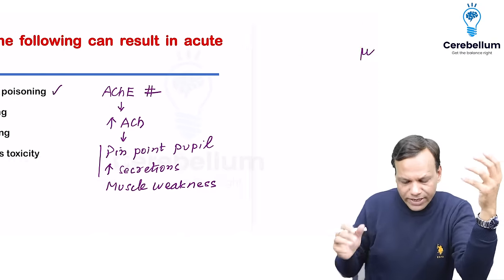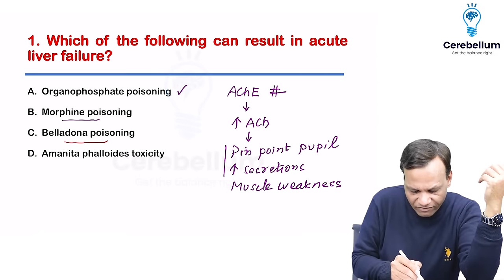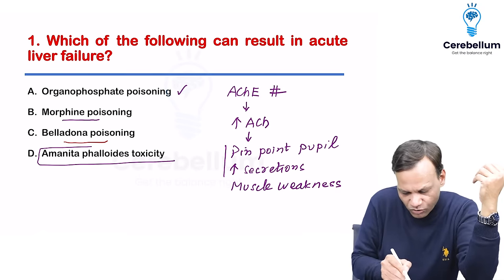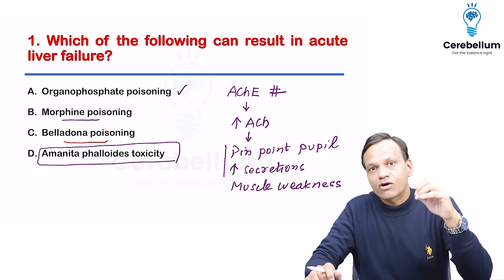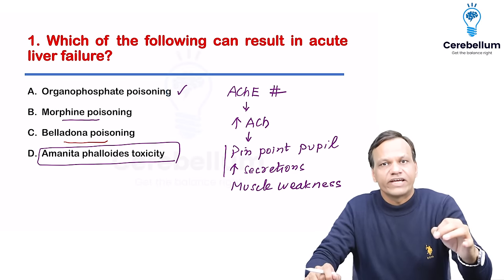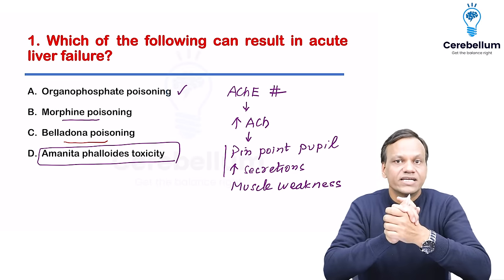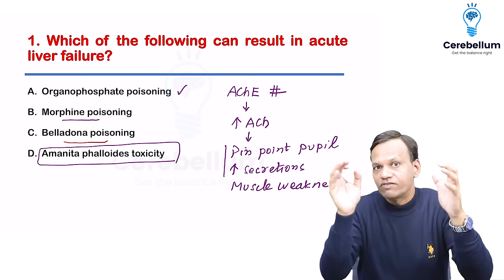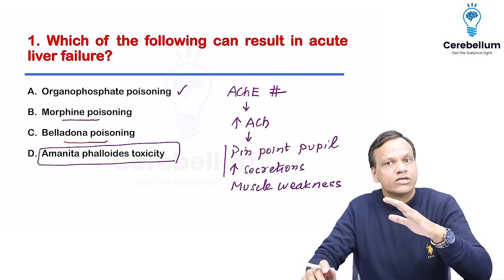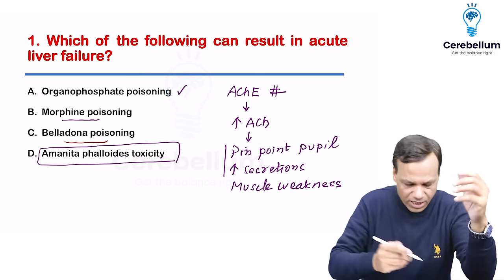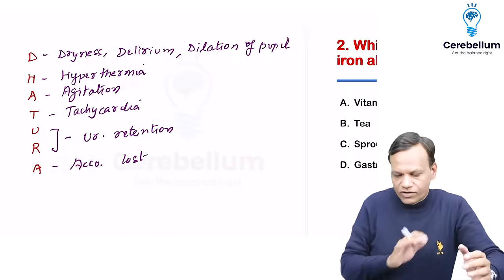Ruling out the other options, Amanita phalloides toxicity — it is a mushroom which can cause liver failure. In Amanita phalloides poisoning there is acute liver failure; in the other three conditions, liver failure is not seen. So the answer is D.